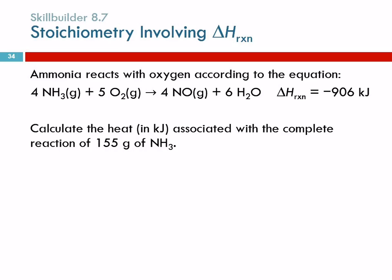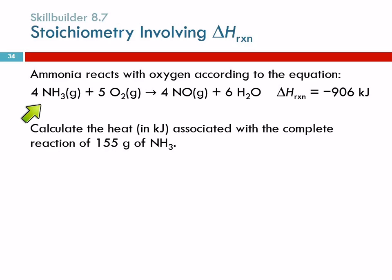Ammonia reacts with oxygen according to this reaction, and the heat of reaction is minus 906 kilojoules. Is this an exothermic or endothermic reaction? Exothermic — the heat is leaving the system. The problem asks: calculate the heat in kilojoules associated with the complete reaction of 155 grams of ammonia. This is still stoichiometry — it's just stoichiometry with energy. I'm still going to use the equation to organize my information. I have 155 grams of ammonia, and the question is how much heat — the answer will be in kilojoules.